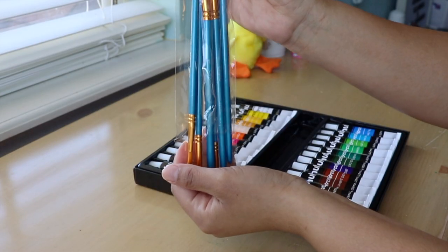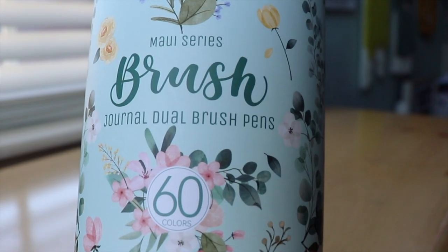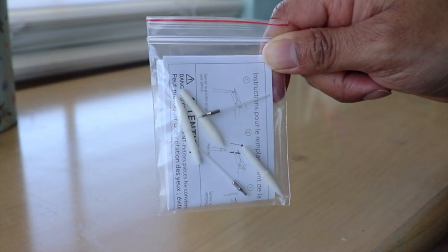There's also a set of six watercolor brushes that are included. Next up is a set of 60 dual-sided brush pens, with one end being a brush tip while the other is a fine liner.